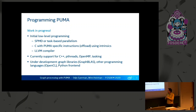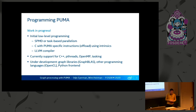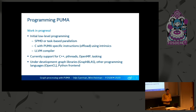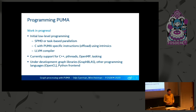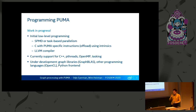How do we program this? That's still a work in progress. Initially, we did our first experiments using simple SPMD-based parallelism in C, with special intrinsics for PUMA-specific instructions and LLVM for building a compiler. In the meantime, there has been increasing support for C++, Pthreads, OpenMP, and some tasking. We're also looking at implementing common graph libraries, other programming languages, and a Python frontend.